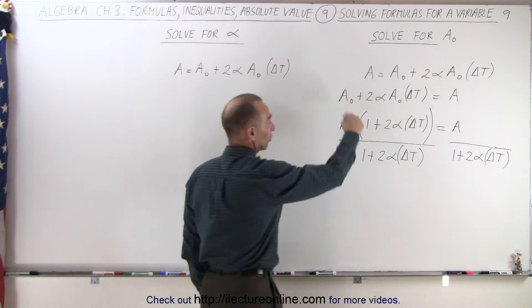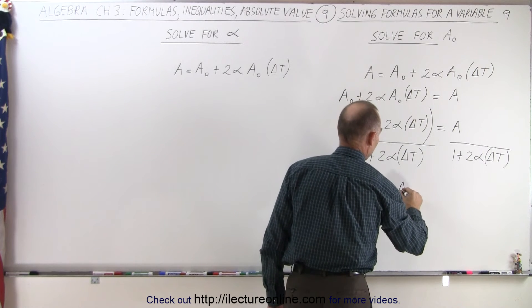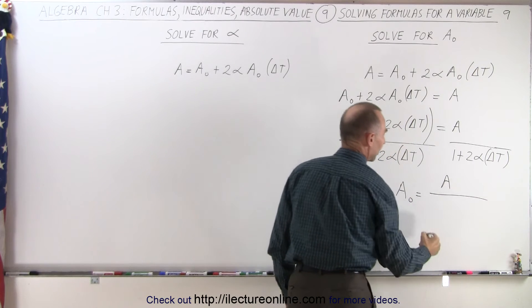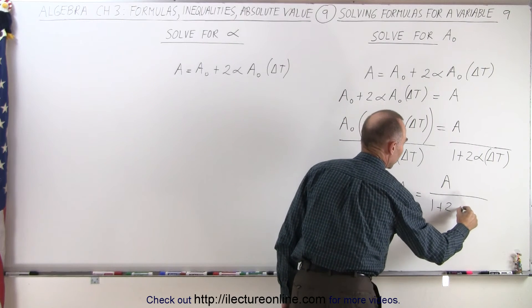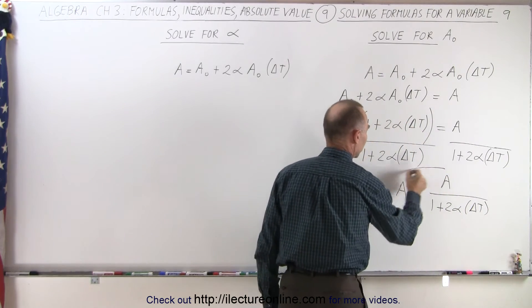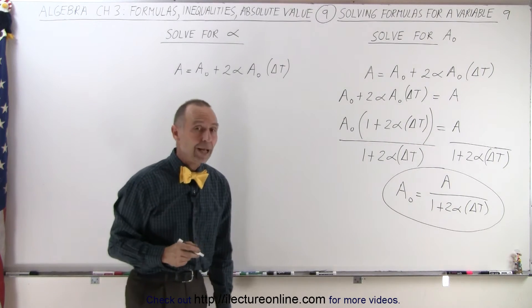On the left side, you can see that those two cancel each other out, so I end up with just A sub nought on the left side, and that equals, on the right side, A divided by 1 plus 2 alpha times delta T. That should be a plus sign. And so this is the same equation, but solved for A sub nought.